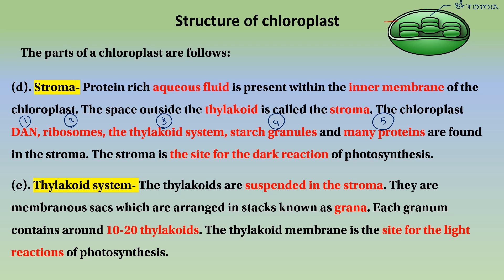The stacks of thylakoids can be compared to a stack of pancakes. Each granum contains around 10 to 20 thylakoids. The thylakoids are the site for the light reactions of photosynthesis.